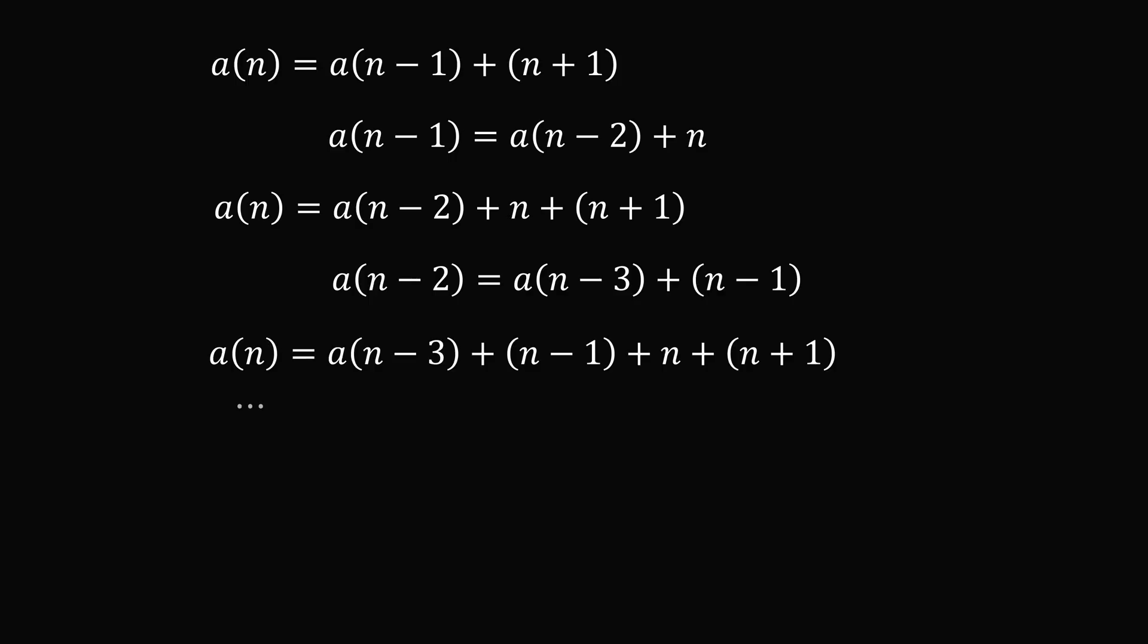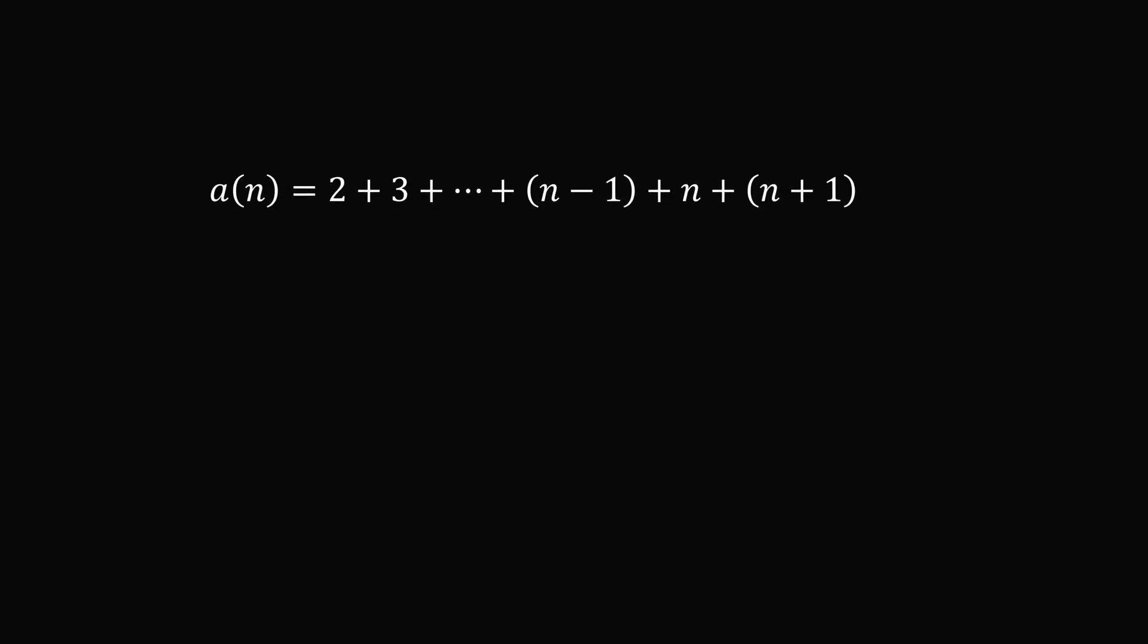We can continue this formula all the way until a(1), which equals 2. So a(n) = 2 + 3 + ... up to (n+1). And now we can use a famous formula. We know that the sum of the numbers from 1 to n equals n(n+1)/2.